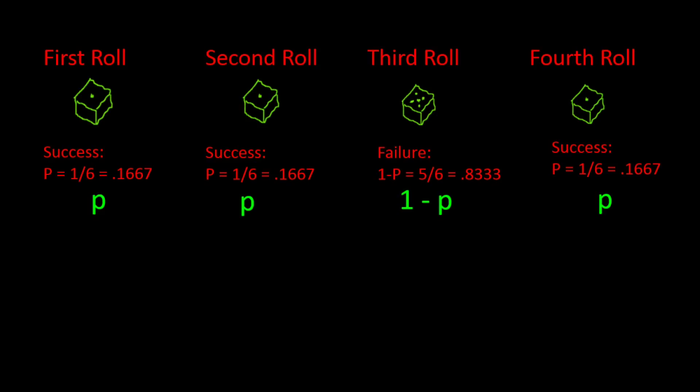Property 3 says that the probability of an observation is constant from observation to observation. So if we roll a die, the probability of a success P is rolling a 1 — that probability is 1/6 every time we roll the die. The probability of a failure, that is not rolling a 1, is 5/6, and that is also constant from roll to roll. So the property is satisfied.